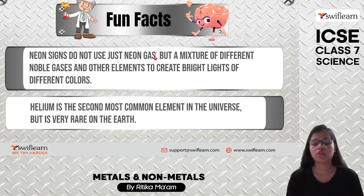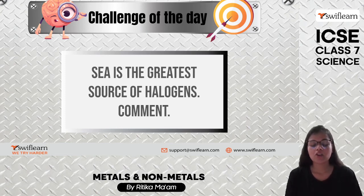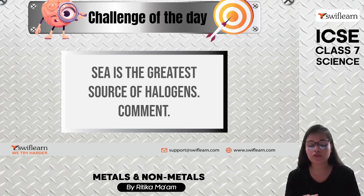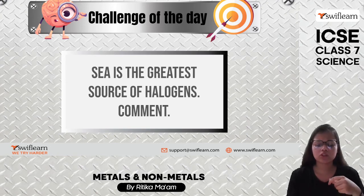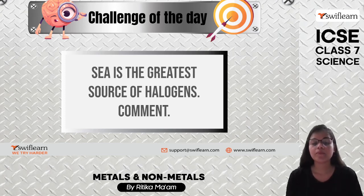Today's challenge: the sea is the greatest source of halogens. Some seaweed contains approximately 0.5% iodine as sodium iodide. Seawater also contains chloride, bromide, and iodide of various elements such as sodium, potassium, and calcium — all of which are halogens. That is why the sea is known as the greatest source of halogens.